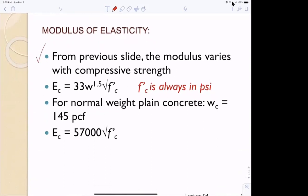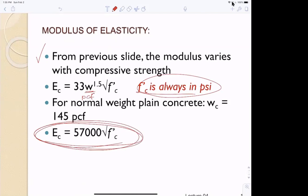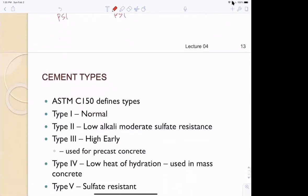The modulus of elasticity varies with the compressive strength. There's an equation for it: if you take the unit weight in pounds per cubic foot to the 1.5 power and multiply by 33 and square root of F prime C, always in PSI, that will give you roughly the E or modulus of elasticity. But if it's normal weight concrete, 145 PCF, you get E equals 57,000 square root F prime C. F prime C in PSI, and the answer is in PSI.